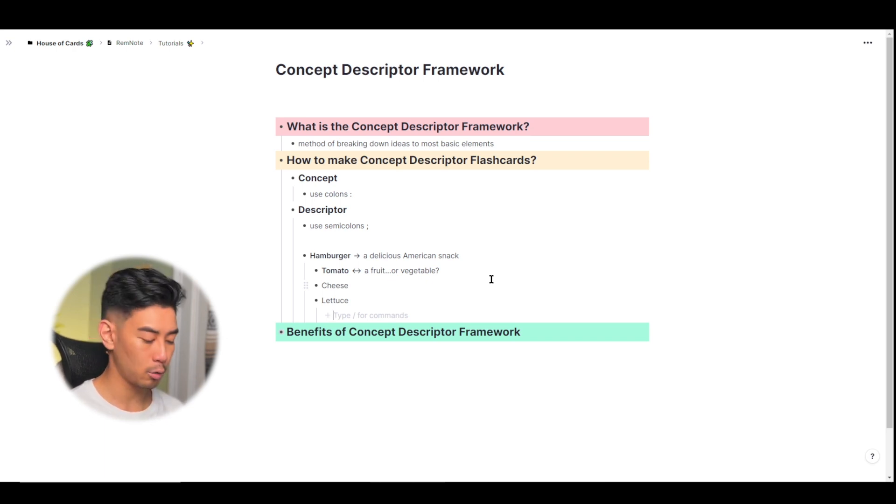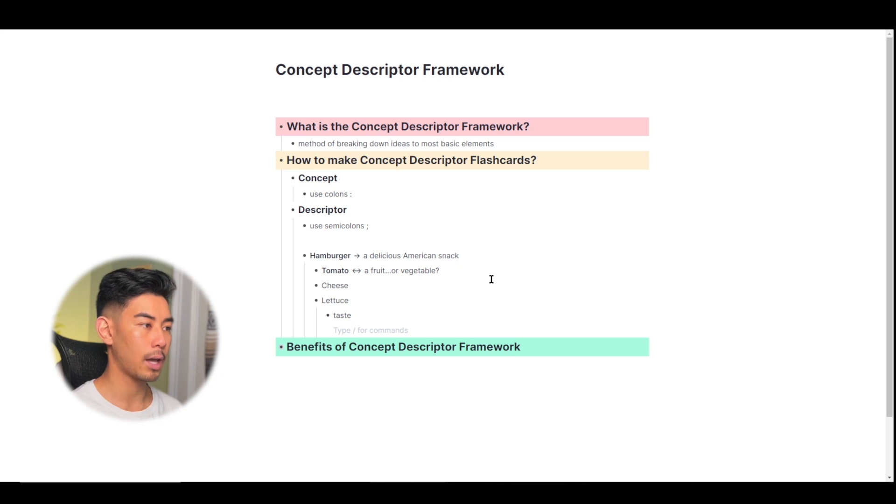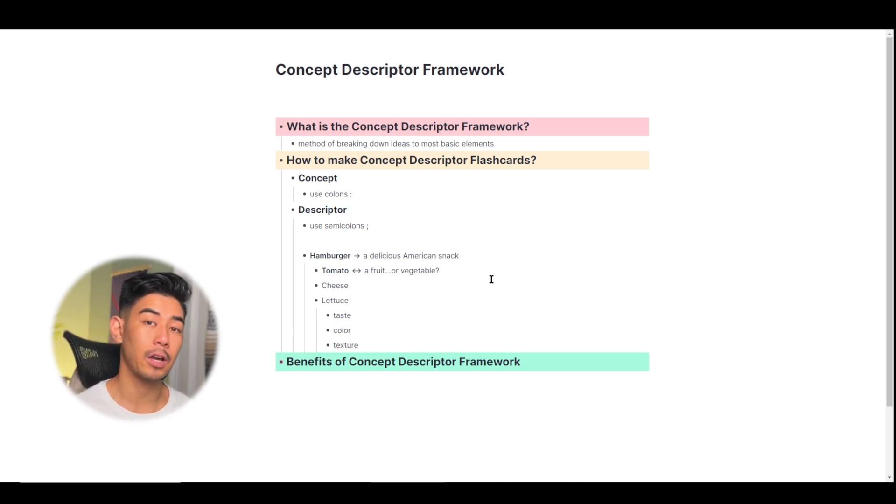So for example, a descriptor of lettuce would be taste, we would have color, we would have texture. To make descriptor flashcards, just use two semicolons. Notice that when you make descriptor flashcards, they automatically become italicized.